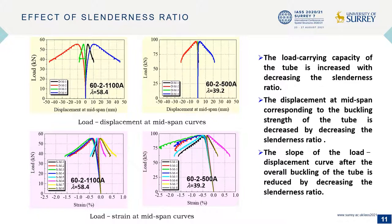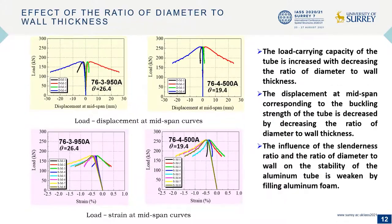For the aluminum foam-filled tubes, by decreasing the slenderness ratio, the load carrying capacity of the tube is increased, and the displacement at mid-span corresponding to the buckling strength of the tube is decreased.